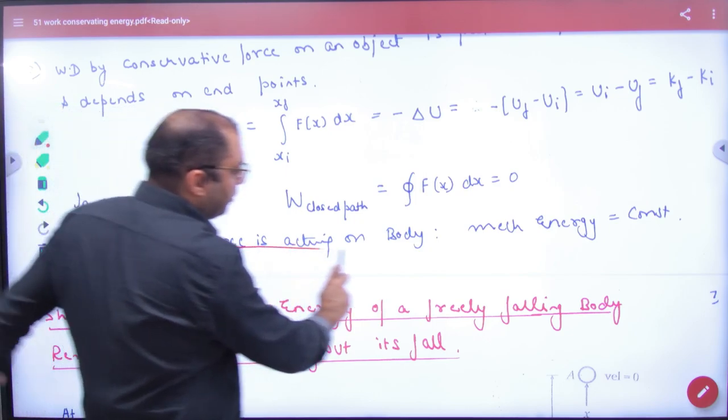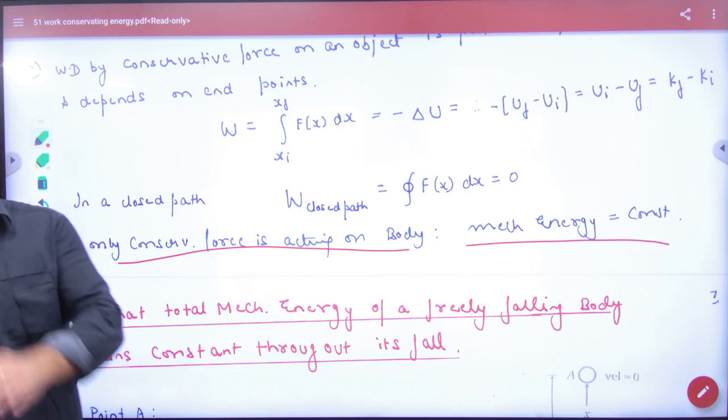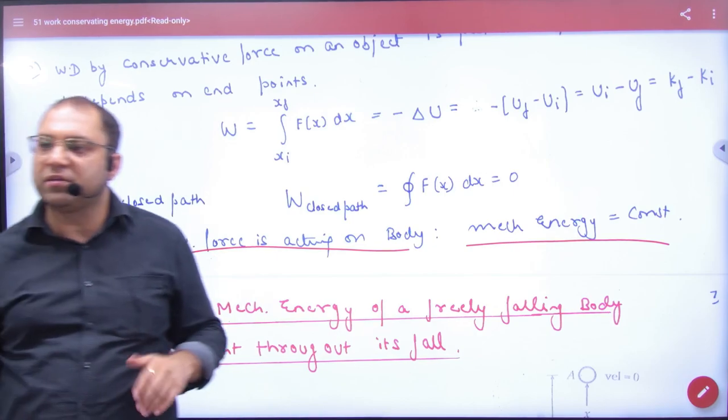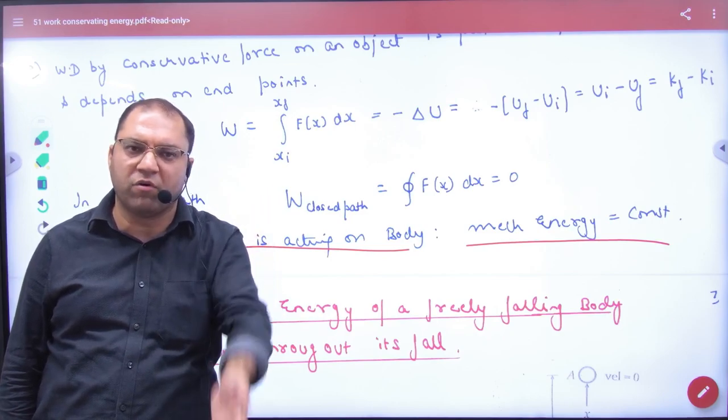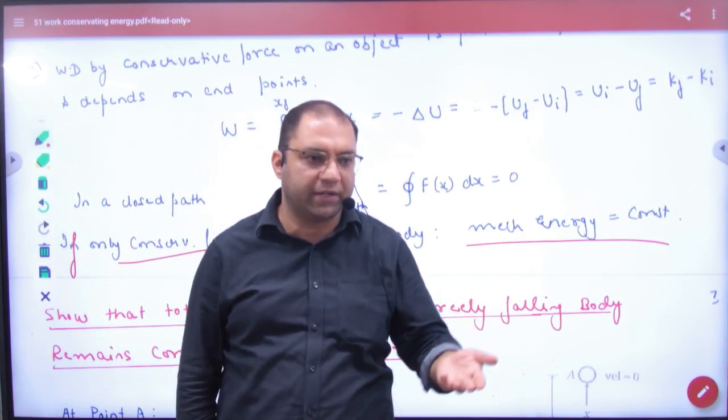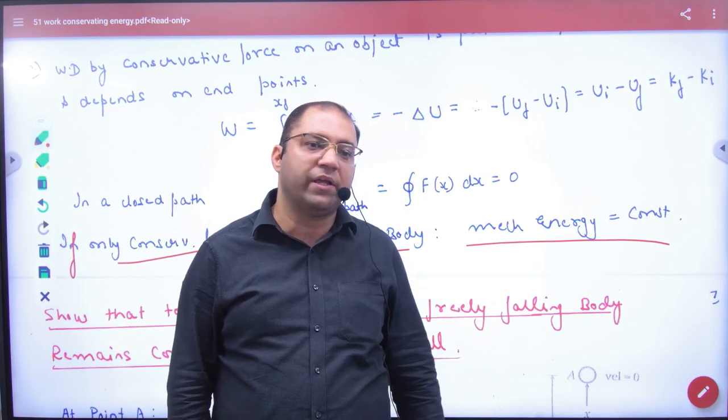If only conservative force is acting on the body, what will be mechanical energy? Constant. Mechanical energy is sum of what? Potential and kinetic energy. Gravity is conservative force, then total energy is constant. From the previous lecture on circular motion...